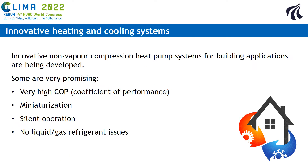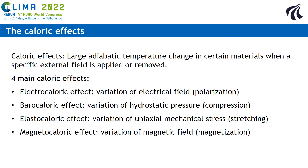There are alternatives to vapor compression systems. Some of them can have very high COP, can be miniaturized, also have silent operation, and have no liquid gas refrigerant issues. Some of those alternatives are based on caloric effects. Caloric effects are large adiabatic temperature changes in certain materials when a specific external field is applied or removed to that material.